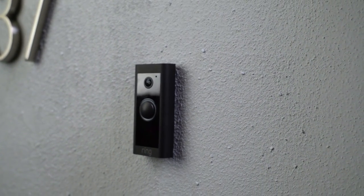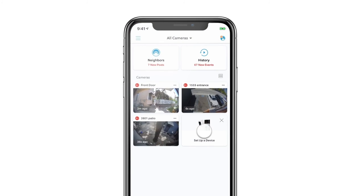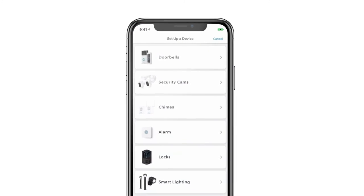Now that everything's installed, open the Ring app and start the setup process. Then just follow the instructions in the app.